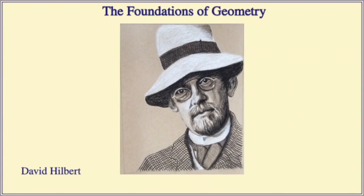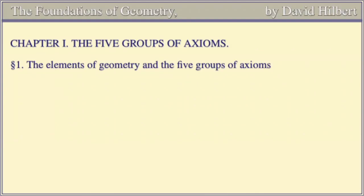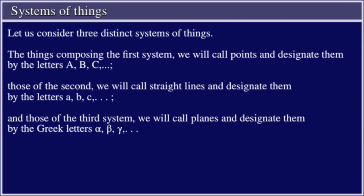The Foundations of Geometry by David Hilbert. Chapter I: The Five Groups of Axioms. Let us consider three distinct systems of things. The things composing the first system we will call points and designate them by the letters A, B, C, and so on. Those of the second we will call straight lines and designate them by the letters lowercase a, b, c, and so on. And those of the third system we will call planes and designate them by the Greek letters alpha, beta, gamma, and so on.